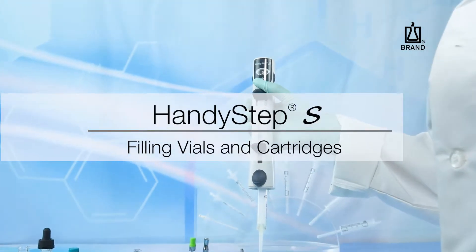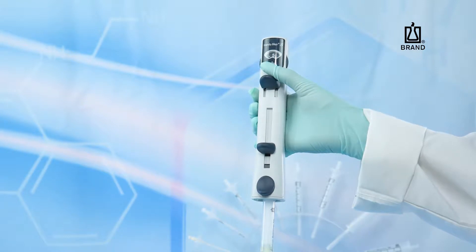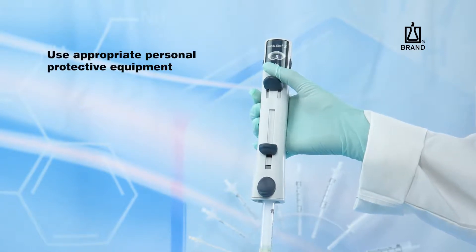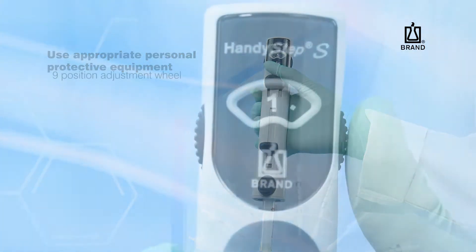This video illustrates the use of the HandyStep S to accurately dispense oils or other viscous liquids into vials and cartridges. This is a general guide and not a substitute for reading and understanding your operating manual.